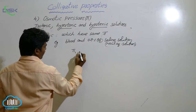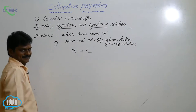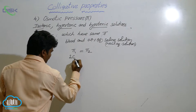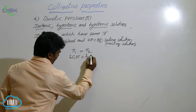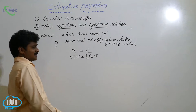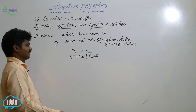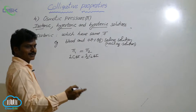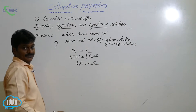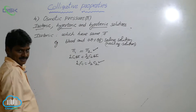For isotonic solutions, pi₁ = pi₂, meaning the osmotic pressure of the first solution equals that of the second. This gives us i₁C₁ST = i₂C₂ST. If temperature is constant for both solutions, T cancels out, leaving i₁C₁ = i₂C₂. This is the key relation used for isotonic solutions.